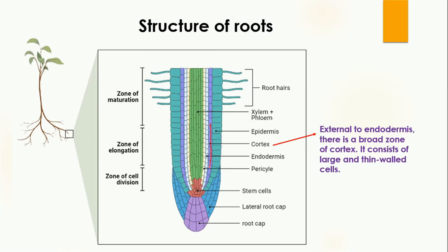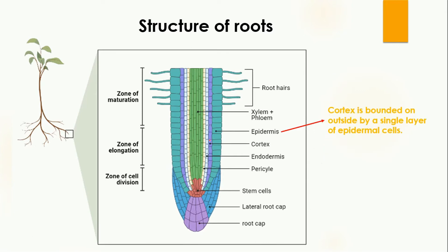Outside the endodermis, another layer is present known as the cortex. The cortex is a broad zone consisting of large, thin-walled cells. You can see that the cells in this layer are large in size compared to those of the endodermis.